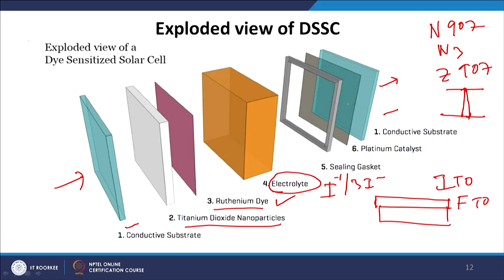A sealing gasket is put to prevent leakage, and a platinum counter electrode is placed on the back. The structure is very simple: two electrodes — one is the conductive ITO or FTO substrate (photoanode); on the back, a platinum-coated counter electrode. In between is the active layer consisting of titanium dioxide nanoparticles and ruthenium dye, with the freedom to choose any dye depending on its absorption property. The electrolyte regenerates the whole process, and the device is sandwiched using an encapsulation agent.